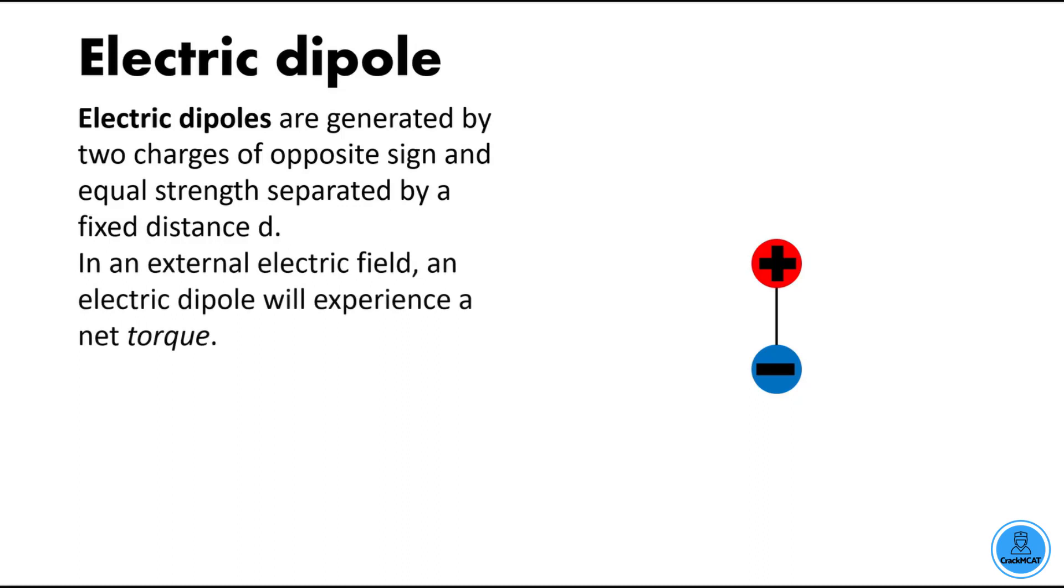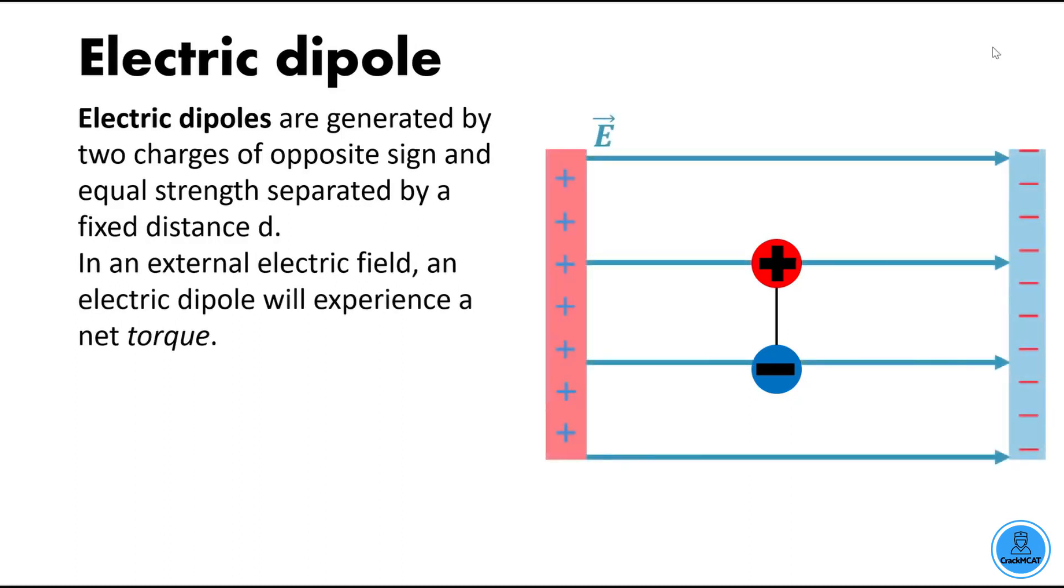When placed in an external electric field, the dipole will rotate and experience a net torque. Suppose we had an electric field that looked like that. The dipole is then going to rotate so that it aligns itself with the field lines.